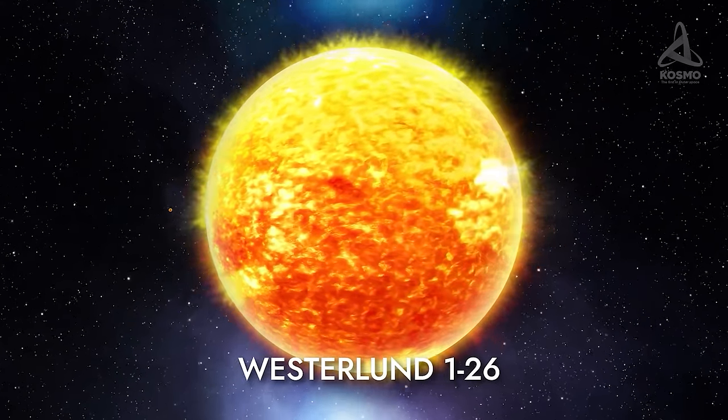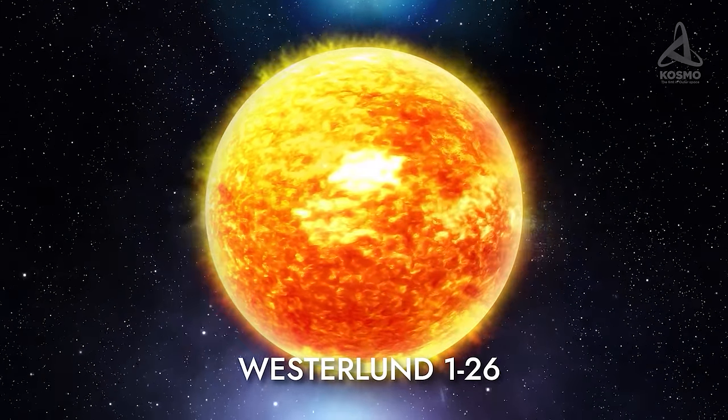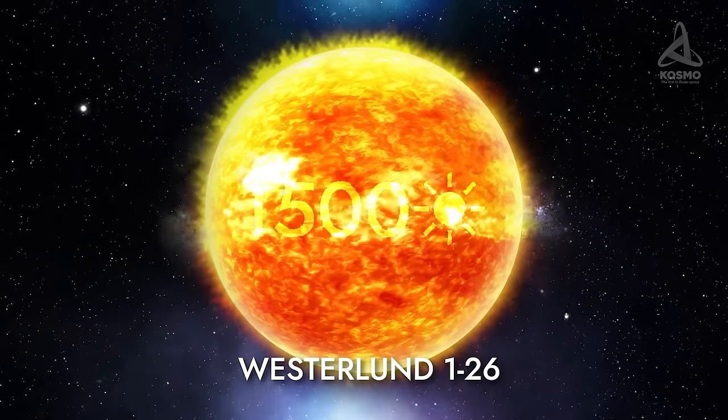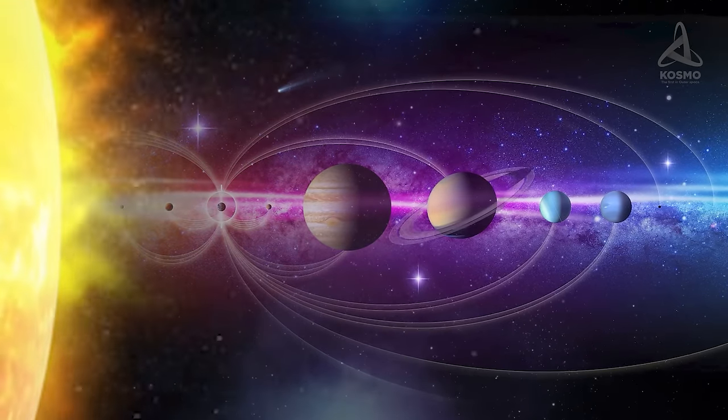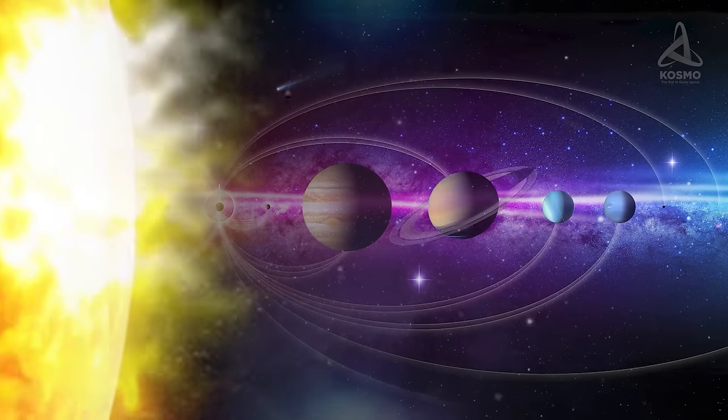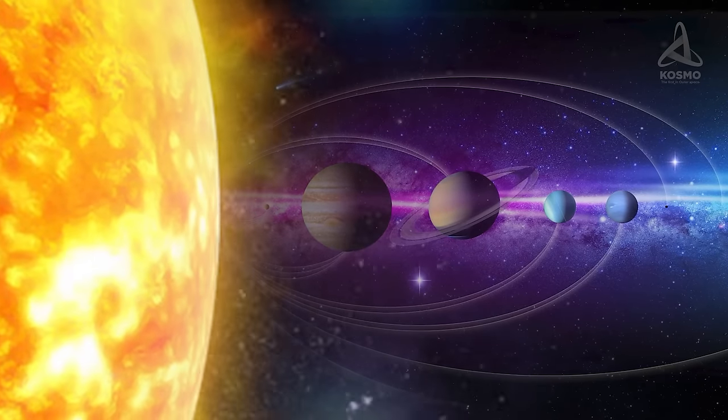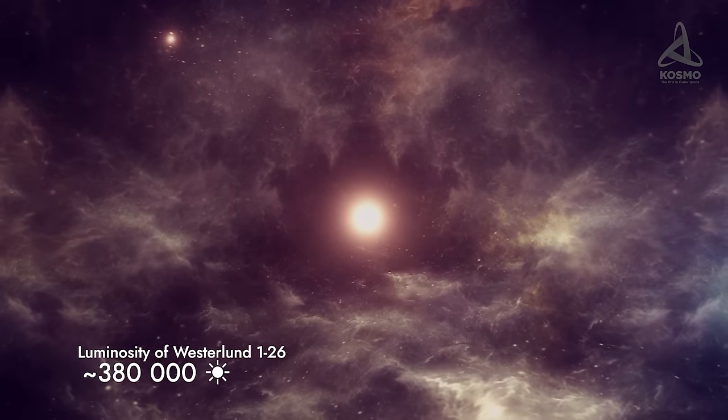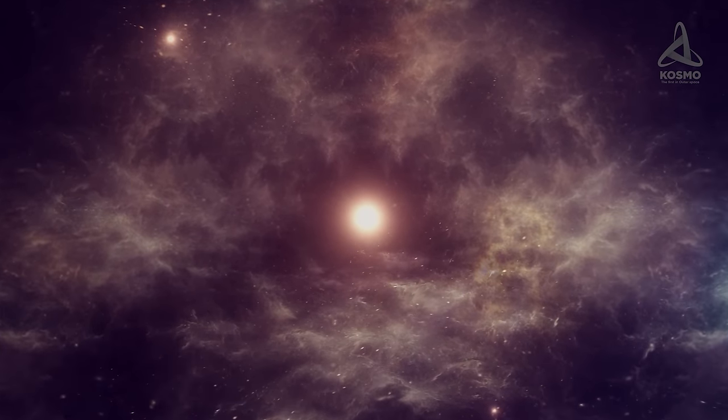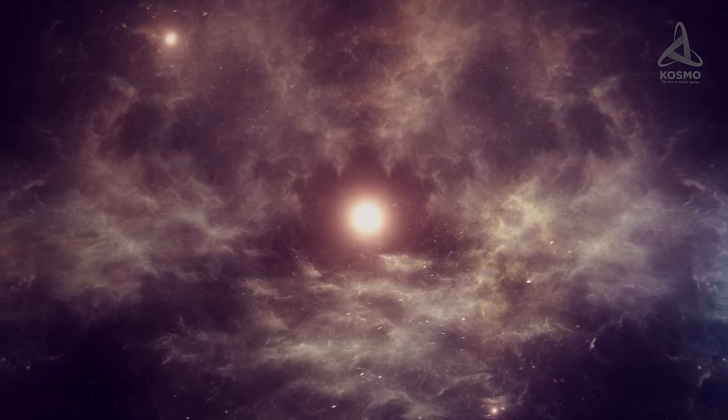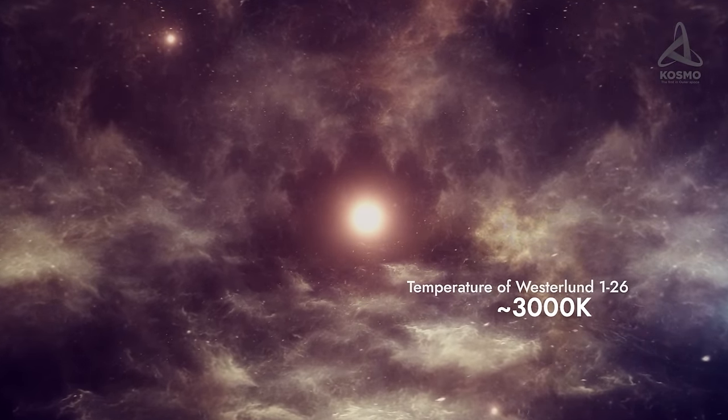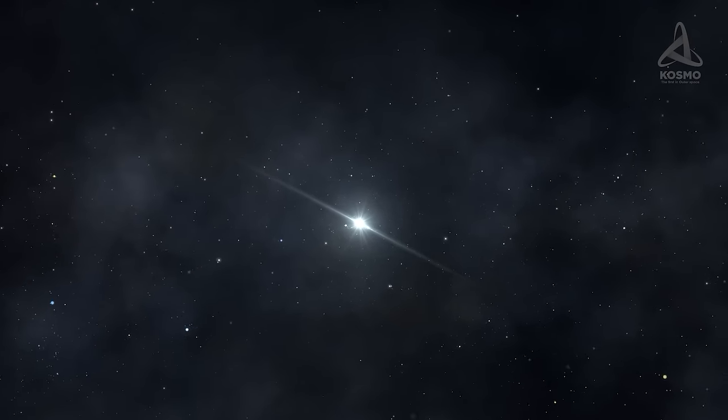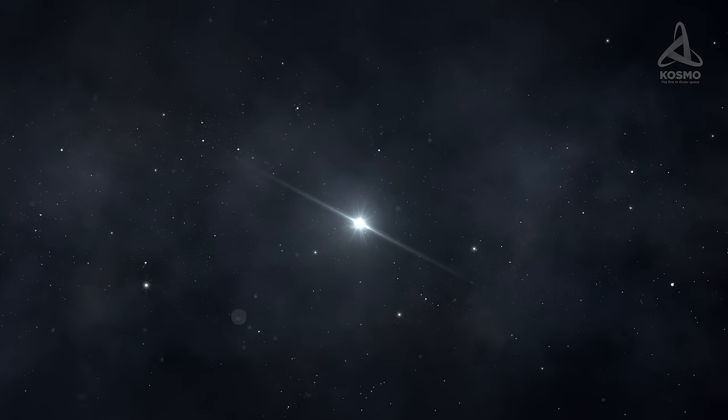However, the radius is more likely to lie closer to the lower margin and measure slightly over 1500 times that of the Sun. Even so, if its centre were to be theoretically placed in that of the Sun, Westerlund 1-26 would cover all the planets, reaching as far as the orbit of Jupiter. The supergiant's luminosity is approximately 380,000 times that of the Sun, although its surface temperature is comparatively low, just around 3000 Kelvin. The star's mass hasn't been gauged yet, but today's perception of stellar evolution allows us to assume that it may be around 20 solar masses.